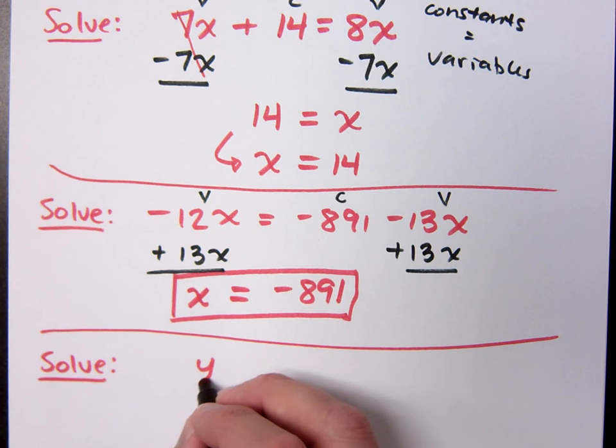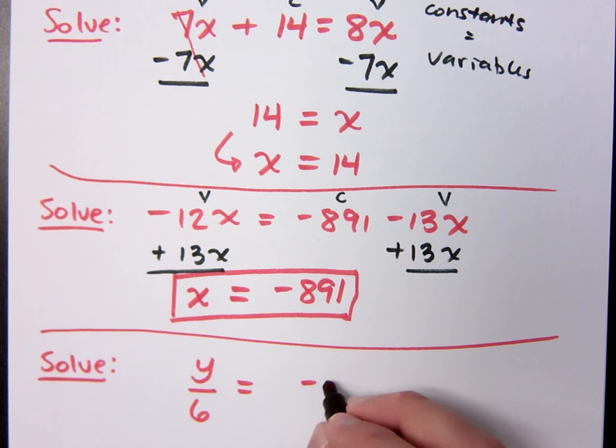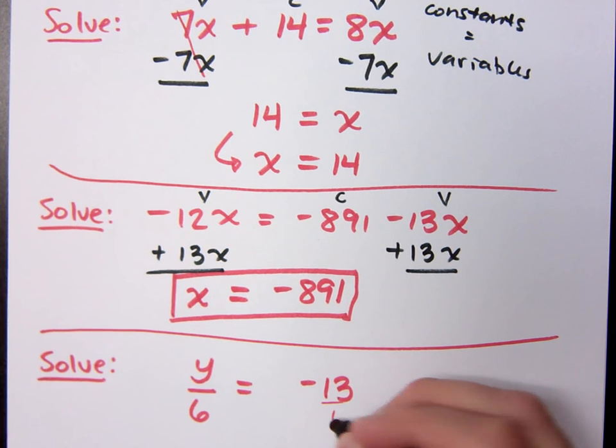Let's see something fun like this. How about y divided by 6 is equal to negative 13? 1 underneath the 13? You're going to put 1 underneath the 13? Multiply times 6. Multiply times 6? Yeah. So you can have the 6 to the y by itself.